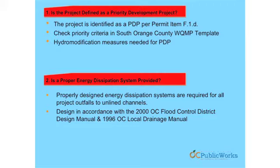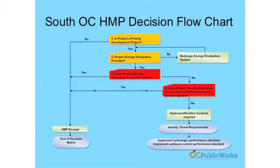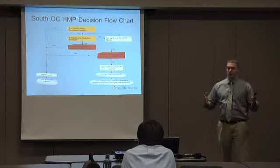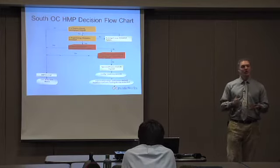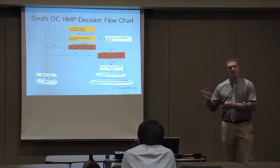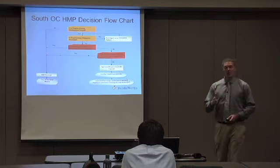You're going through those two steps — PDP as defined within the permit, and then a properly designed outfall in accordance with the 2000 OC Flood Control District design manual. The next question is: does the project directly discharge to an exempt system? As I mentioned this morning, what an exempt system is is still in discussion. The HMP will change based on the final agreement between the county and the regional board. For right now, the only exempt systems are if you're discharging directly to an underground storm drain that goes right into the ocean or a bay, or a concrete-lined system all the way from the point of discharge to the ocean or bay — concrete-lined both bed and bank.